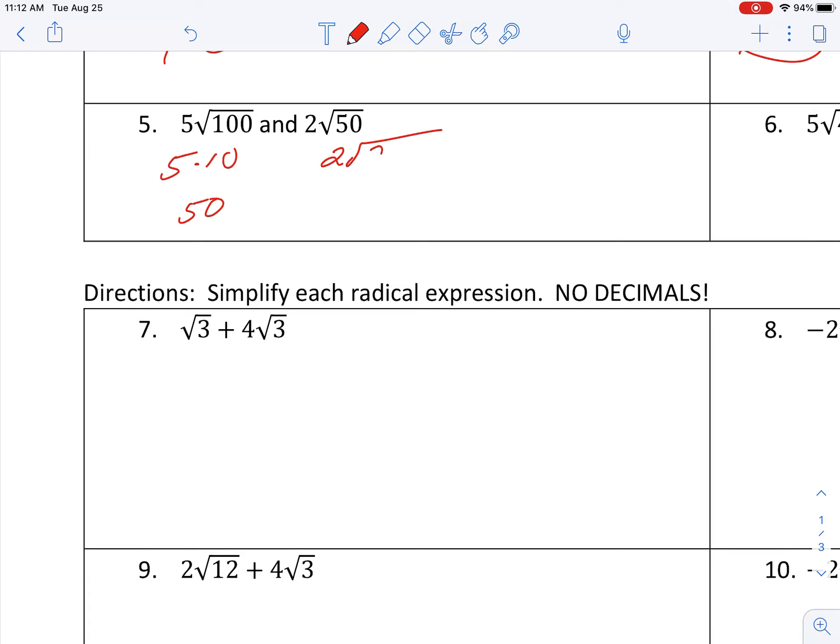And eventually we get to 5 and 5. Pairs make perfect squares. And we get 5 times 2, which is 10 root 2. Are those like terms then? Definitely not. Okay, the 50 does not have a root 2. So those are not considered to be like terms.